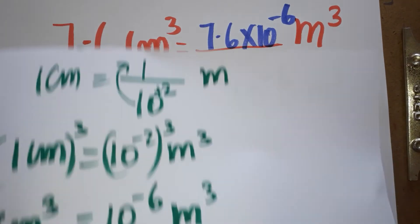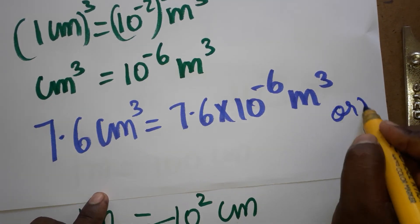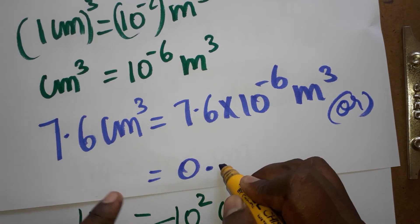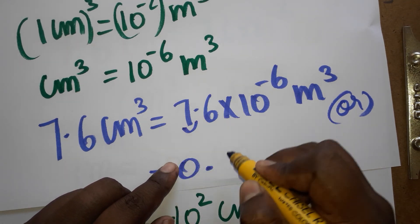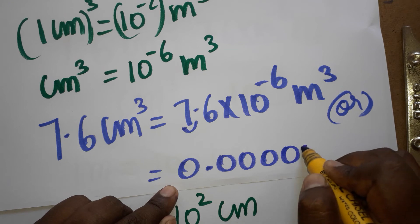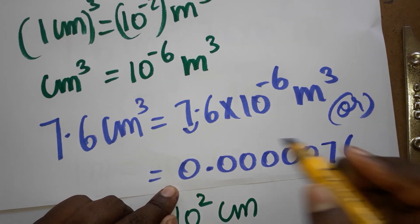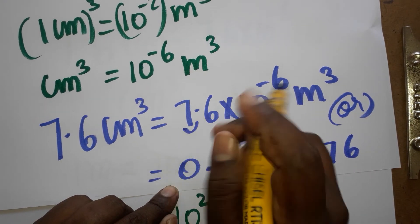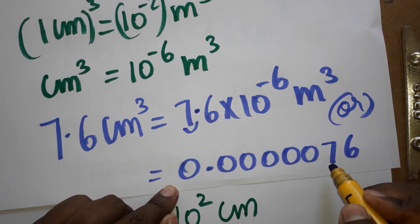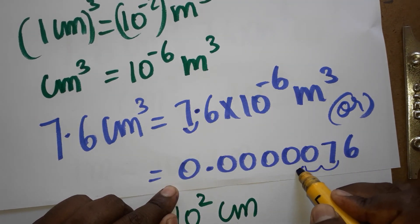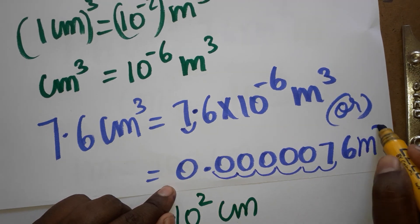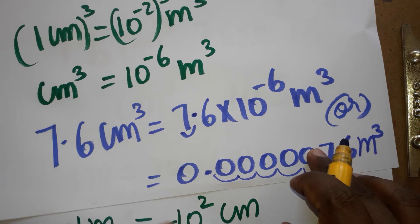Or we can write the same answer in decimal form: moving the decimal 6 places, we get 0.0000076 meter cube. The decimal moved 6 places, so 76 becomes the digits after the 6 decimal places. You can write either form as your answer.